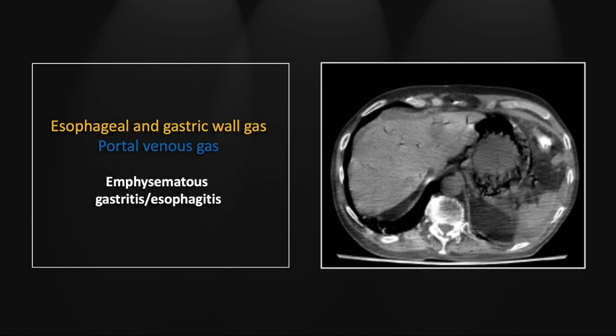In the abdomen, there is extensive gastric pneumatosis, and in addition, peripheral, arborizing, linear gas collections in the liver consistent with portal venous gas.